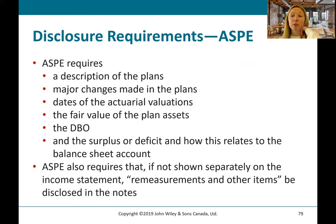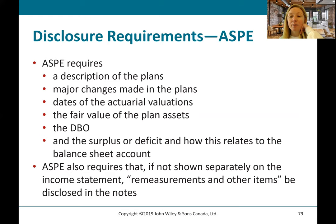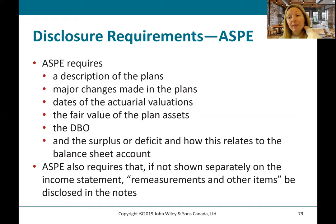Presentation on the income statement may require you to disclose the description of your plan, major changes in the plan, the dates of the actuarial valuations, the fair value of the plan assets, the defined benefit obligation, and the surplus or deficit and how this relates to the balance sheet account. ASPE also requires that, if not shown separately on the income statement, re-measurements and other items be disclosed in the notes. Where we had differences between expected return and actual return, or a re-measurement of an actuarial gain or loss, those items — even though they go through pension expense for ASPE because we don't have OCI — need to be disclosed separately in the notes of the financial statements.